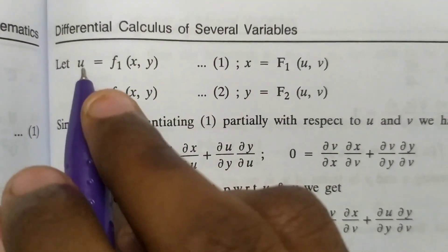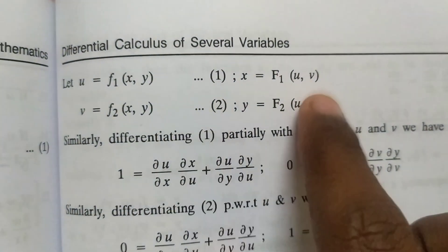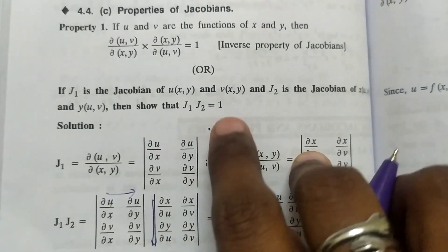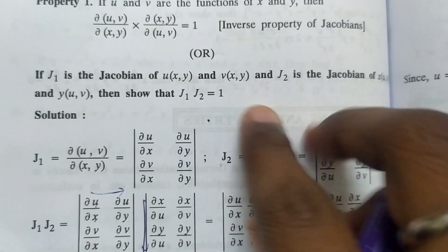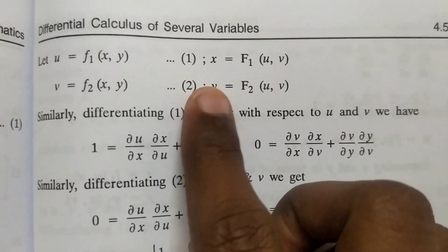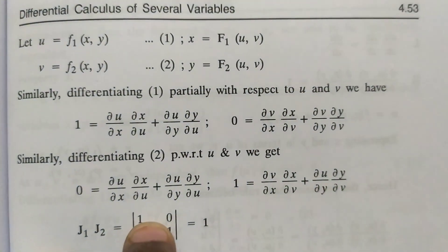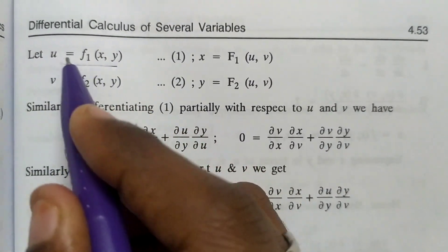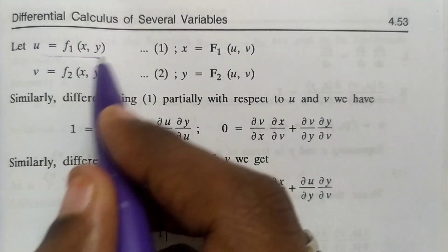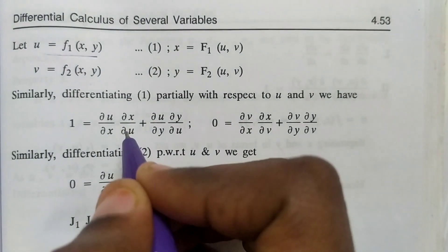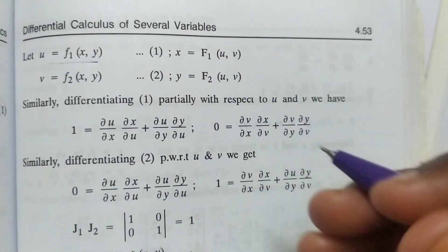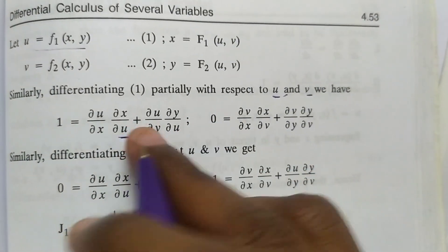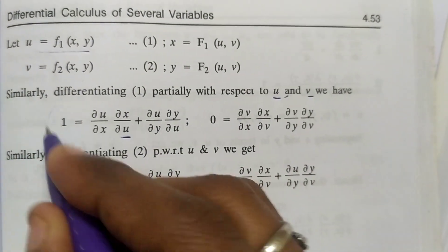Let u be a function of x and y, and v a function of x and y. We can write the inverse: x = F1(u, v) in capital F format and y in small f format. Now I am going to differentiate the first equation with respect to u and v using the chain rule (tree method). Differentiating u with respect to u gives 1, so: ∂u/∂x · ∂x/∂u + ∂u/∂y · ∂y/∂u = 1.